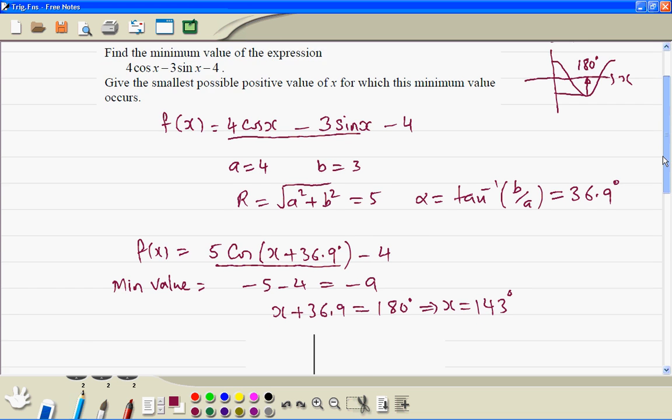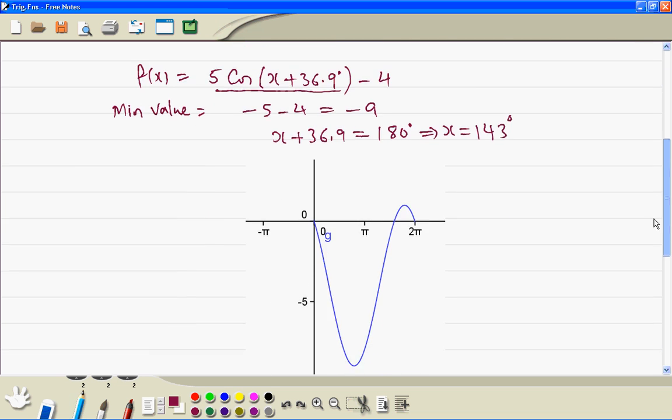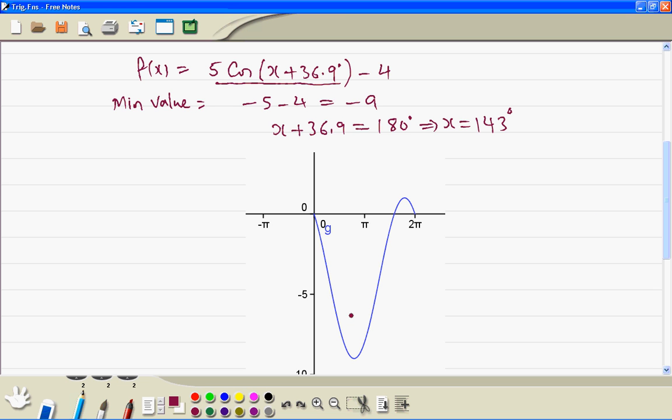And also look at the sketch of this function here. So the minimum value here is minus 9, somewhere here which is 143 degrees.